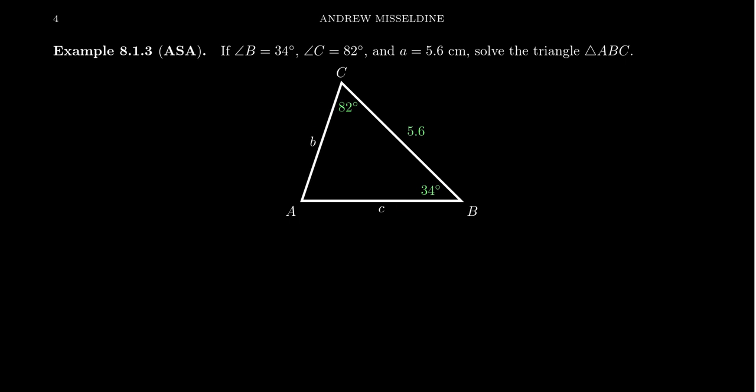All right, so how do we do this? We've learned previously how to solve the AAS condition. So if you have angle A, angle B, and side length a, then we can solve this using AAS. Okay, it turns out ASA is basically the same thing, because our first goal is to find angle A right here.